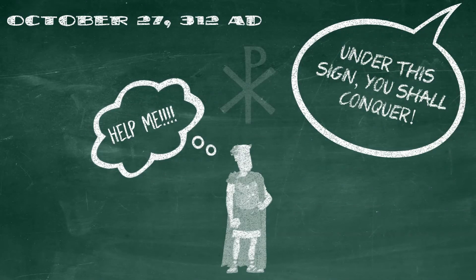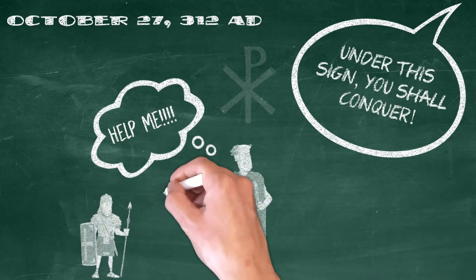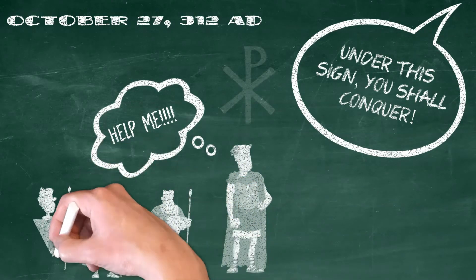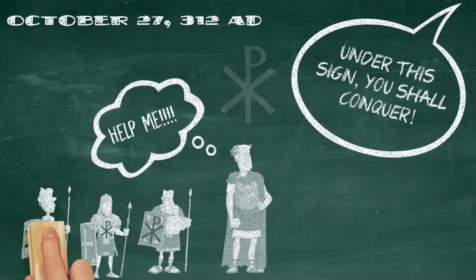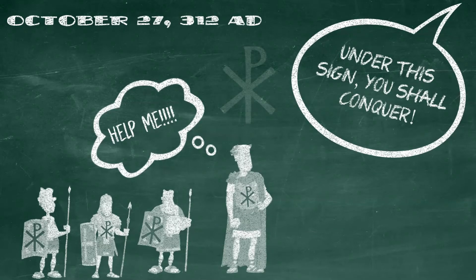And when the vision passed, Constantine claimed he had never seen that symbol before that night, but he ordered all of his men to put that symbol onto their armor and shields before they went into battle. And the following day, Constantine's army completely overwhelmed Maxentius' much stronger forces. And ultimately, Constantine conquered and became the Roman emperor.